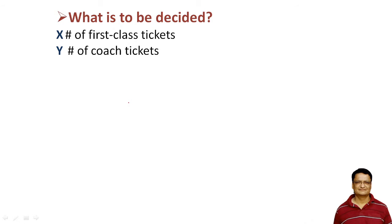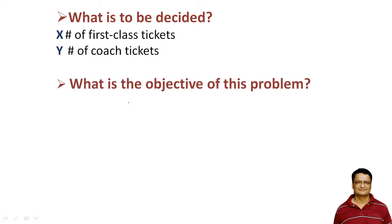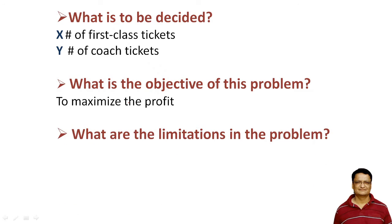Let x be the number of first class tickets and y be the number of coach tickets — these quantities we have to decide. The objective of the problem is to maximize the profit, so we have to decide the quantities x and y so as to maximize the profit.